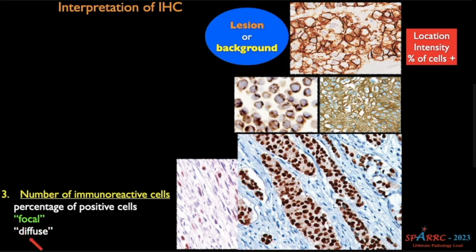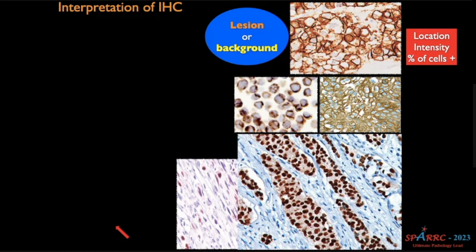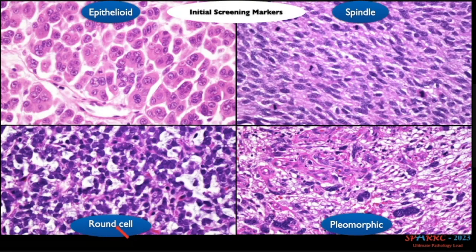Intensity can be weak, intermediate, or strong. For percentage of cells, it is always better to state 100% or 10% of tumor cells are positive. The terms focal and diffuse are used — there is no strict cutoff in textbooks, but a practical rule is: less than 25% is focal, more than 25% is diffuse. Location, intensity, and percentage of cells are all very important in interpretation.